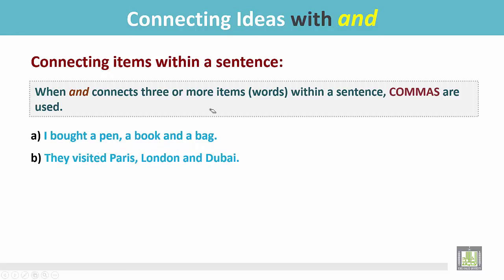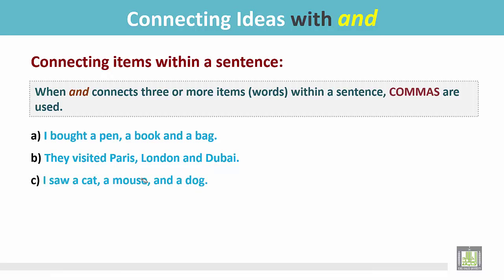Example B: 'They visited Paris, London, and Dubai.' There are three names of cities. There is a comma between the first two, but the last one is joined by 'and' with no comma before it. Example C: 'I saw a cat, a mouse, and a dog.' There is a comma between the first two items, and there is also a comma before 'and.'